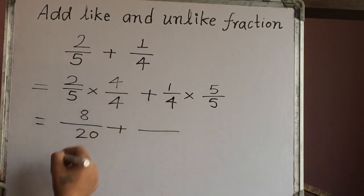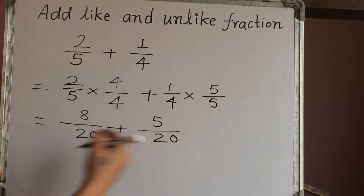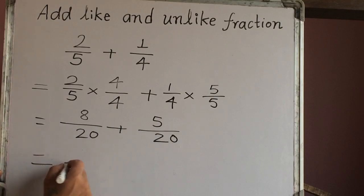Plus fraction line. 1 times 5 is 5. 4 times 5 is 20. So we have here same denominator which is like fraction. Now you know how can we add this?